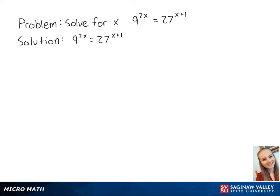For this problem, we want to solve for x in the equation 9 to the 2x equals 27 to the x plus 1. Using the following property, we want both sides of the equation to share the same base.